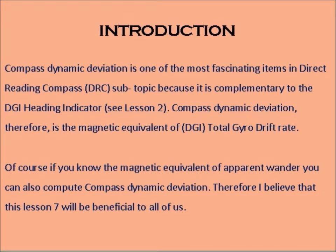Compass dynamic deviation is one of the most fascinating items in the direct reading compass DRC subtopic because it is complementary to the DGI heading indicator — see lesson 2. Compass dynamic deviation is therefore the magnetic equivalent of DGI total gyro drift rate.